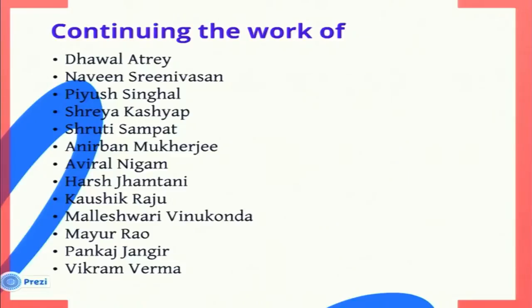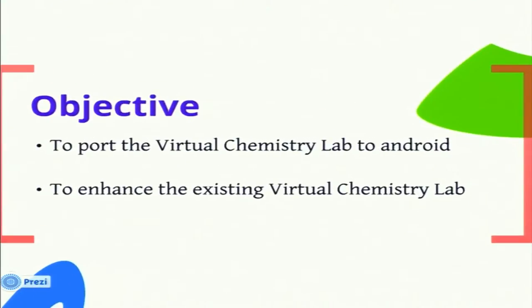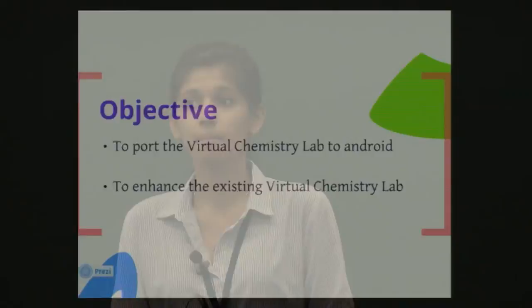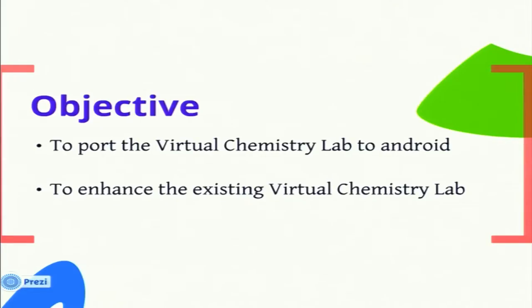These teams primarily were Dhaval, Naveen, Piyush, Shreya, Shruti, Anirban, Aviral, Harsh, Kaushik, Maleshwari, Mayur, Pankaj, and Vikram Verma. These teams provided us with a virtual chemistry lab in Java that would run on desktop. However, our version runs on Android. Our major aim was to port this virtual chemistry lab to Android. The previous version also had a number of operational issues and the graphics needed a lot of improvement, so our second objective was to enhance the whole virtual chemistry lab.